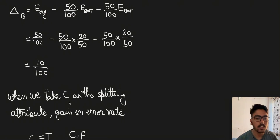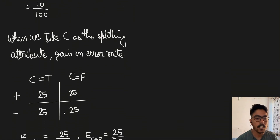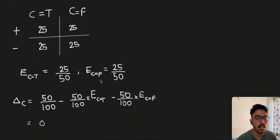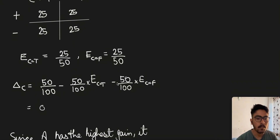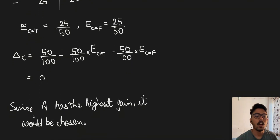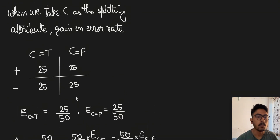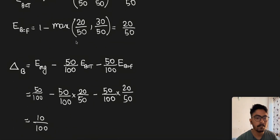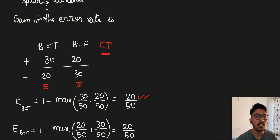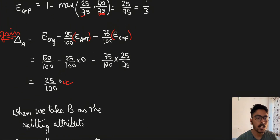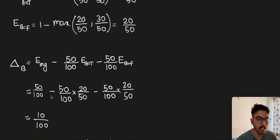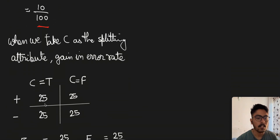Then we take C as the splitting attribute and again calculate the gain in error rate. The contingency table shows 25, 25, 25, 25 across the classes, and the gain comes out to be 0, because it comes to 1 minus 1 which is 0. Now, since A has the highest gain — 25/100 — it would be chosen as the splitting attribute, because we need to choose the maximum gain in error rate. A's gain of 25/100 is greater than B's gain of 10/100, and C's gain is 0.